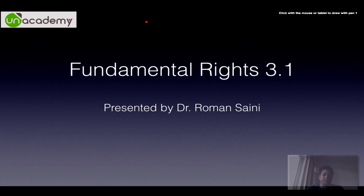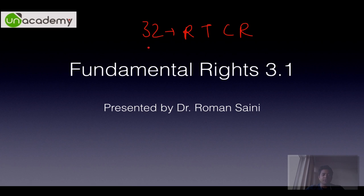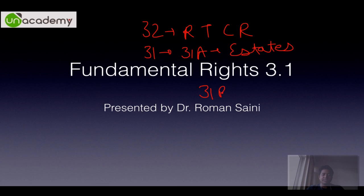We have Article 32, which is a fundamental right, but it is not a right per se — it is a right for the rights, that is the right to constitutional remedies. Then there is Article 31, which deals with 31A related to estates, 31B which deals with the Ninth Schedule, and 31C which deals with DPSP. Article 31 deals with those laws which will not be voided solely on the ground that they violate certain fundamental rights.